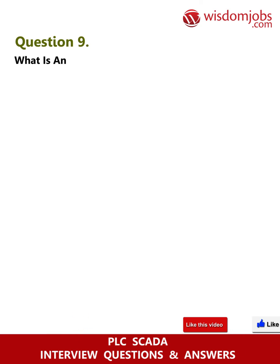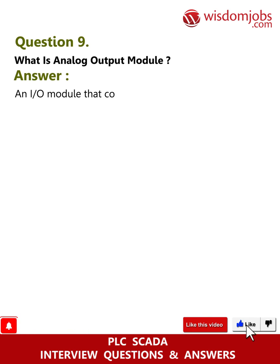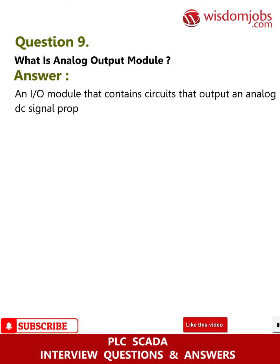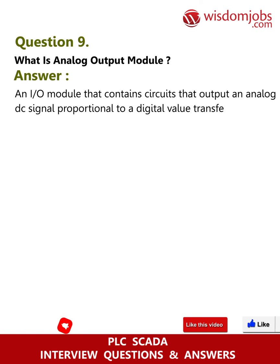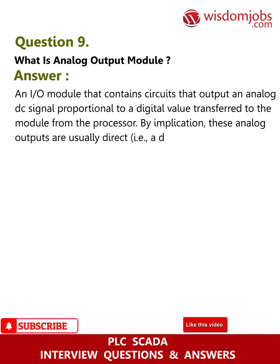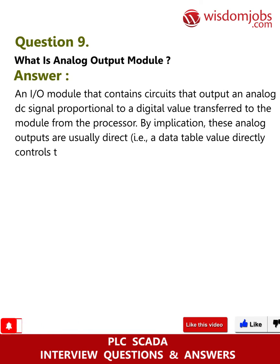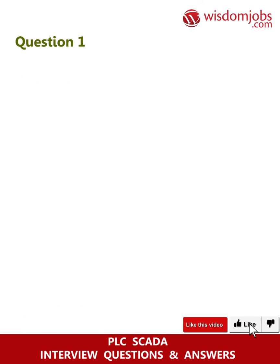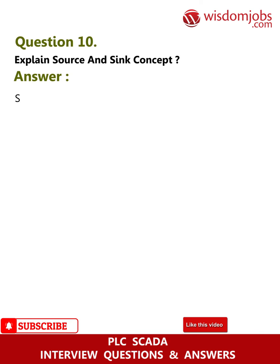Question 9: What does an analog output module do? Answer: An IO module that contains circuits which output an analog DC signal proportional to a digital value transferred to the module from the processor. By implication, these analog outputs are usually direct, meaning a data table value directly controls the analog signal value.